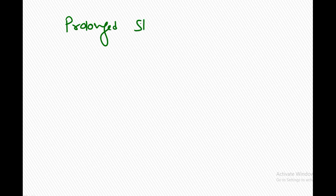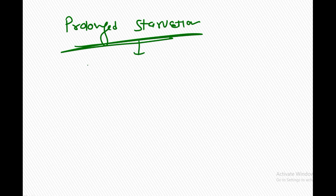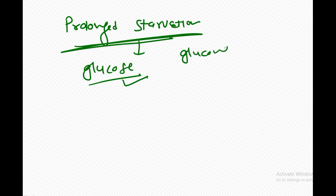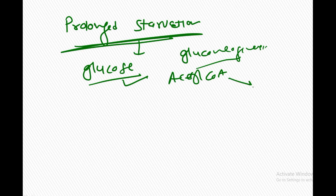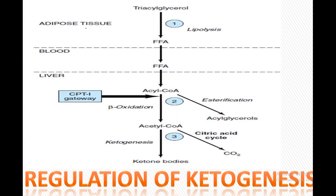The other most important condition is prolonged starvation. When starvation is for a long duration, glucose is not available. For the same reason, gluconeogenesis is activated, fatty acids are broken down, and more and more acetyl-CoA is channeled to the ketone body pathway. So uncontrolled diabetes mellitus and prolonged starvation are the two causes for increased ketone body levels.